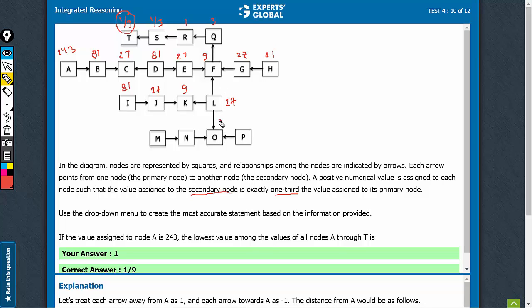Secondary of 27, so 9. Primary of 9, so 27. Primary of 9 again, so 27. Primary of 27, so 81.